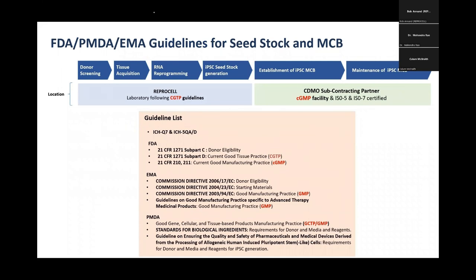For most of us, we look to the FDA for guidelines; in Europe you look to the EMEA, and in Japan to the PMDA. The rules that apply with the FDA may be different from those at the EMEA and from those at the PMDA. This is really important because if the starting material is not eligible for making a therapeutic product, then the subsequent iPSC line will also not be eligible.